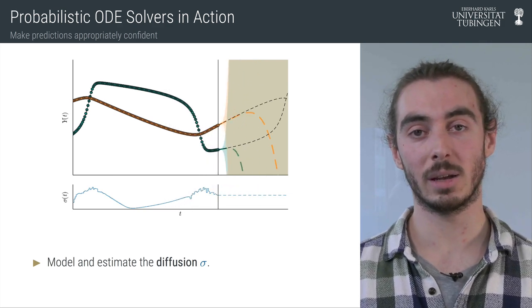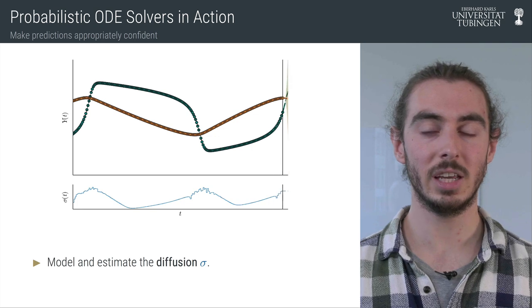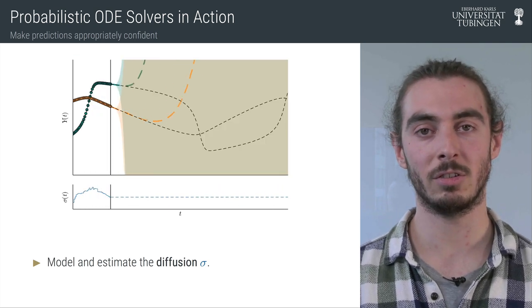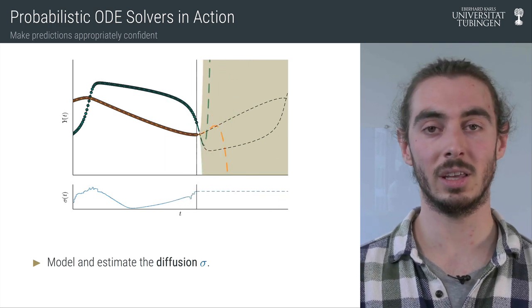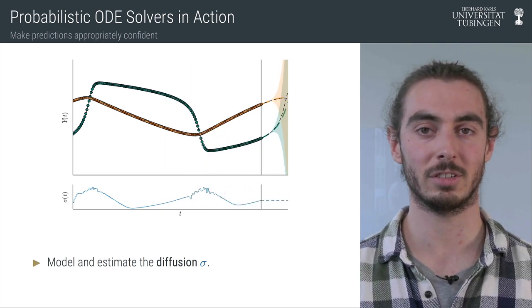And even more, we can model it in a number of different ways. And here we show it modeled by a step function and we see how the probabilistic solver becomes more flexible and how the uncertainties can adapt to the solution trajectory.